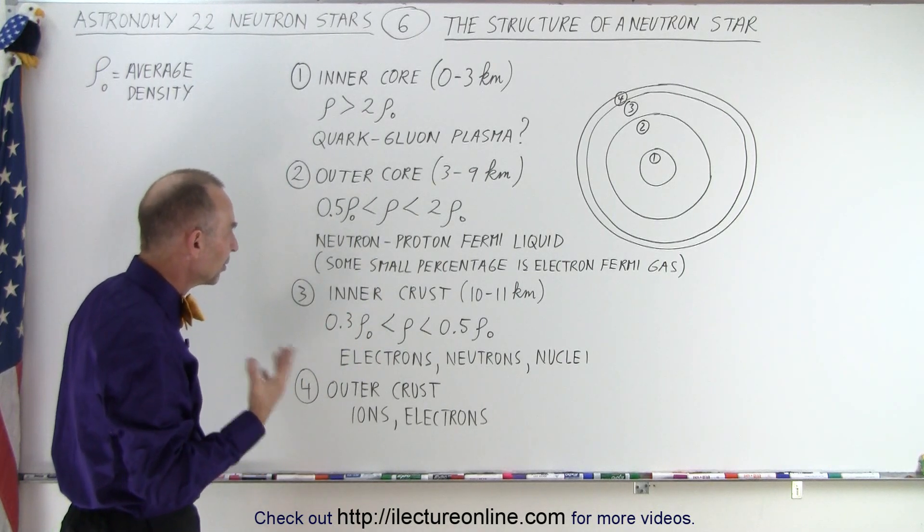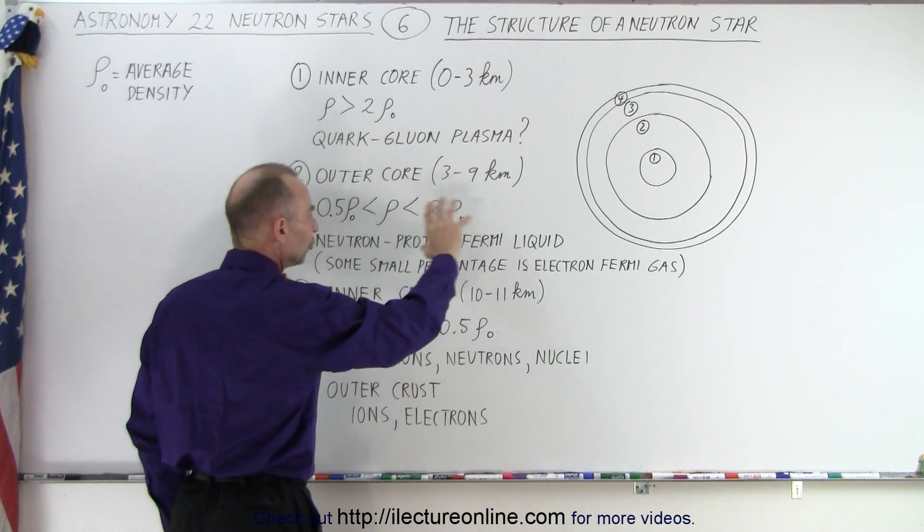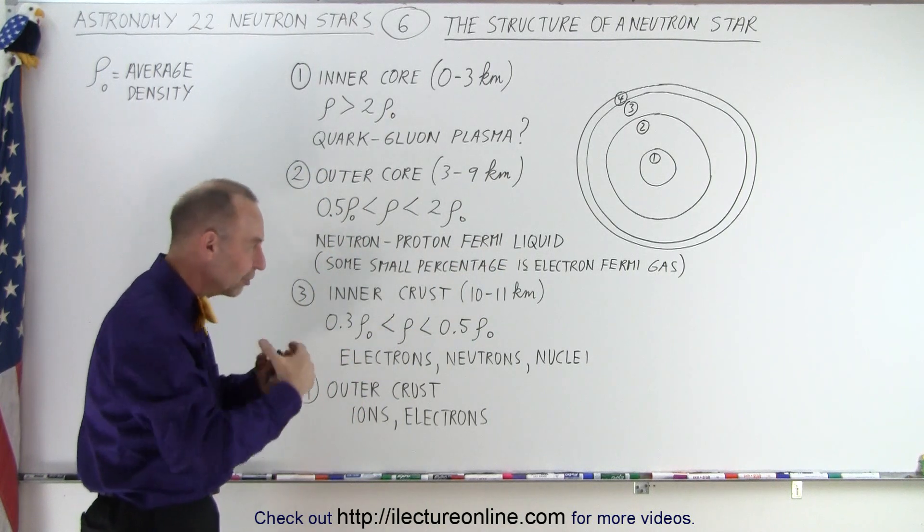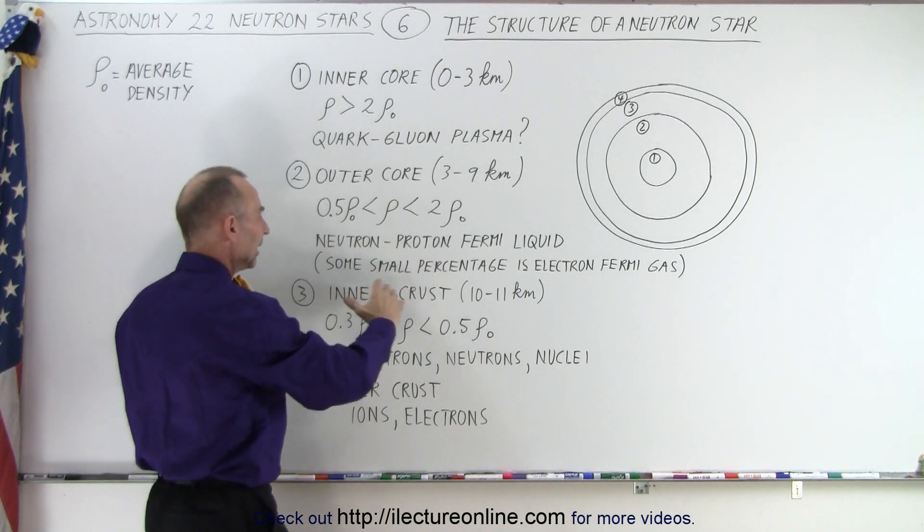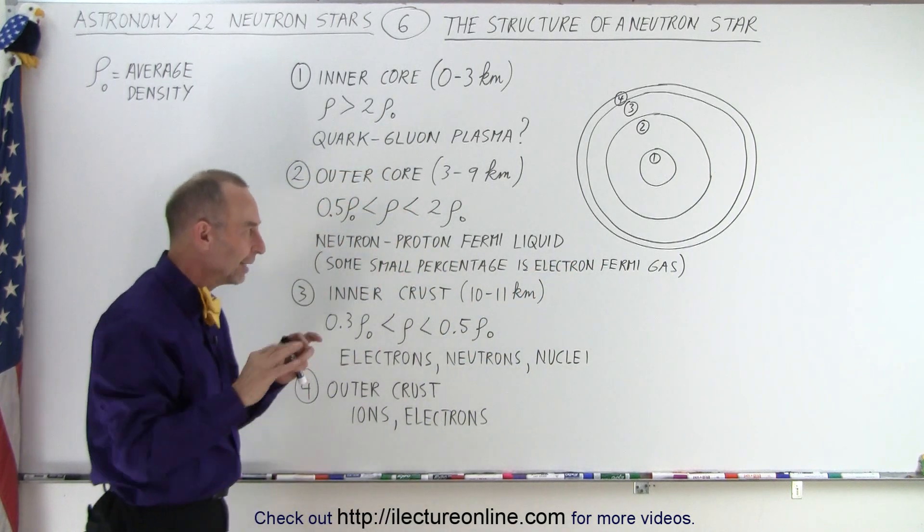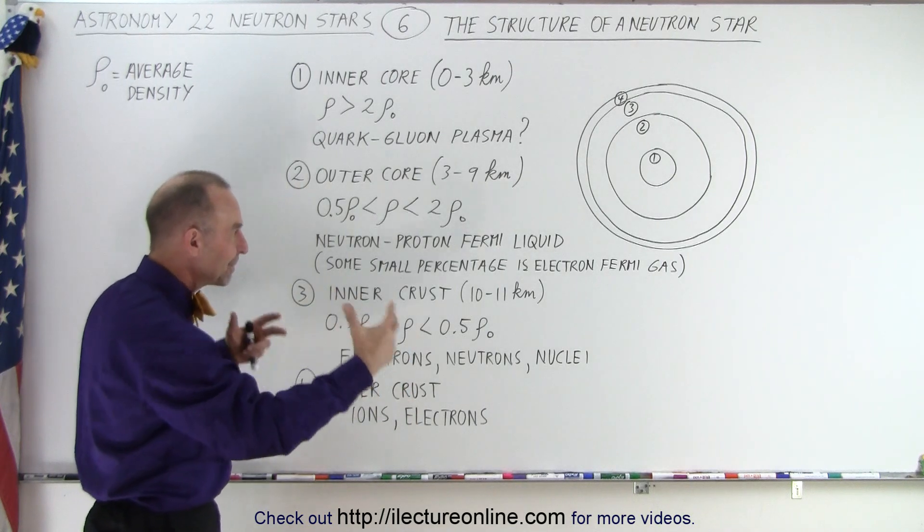So there we theorize that it's a mixture of neutrons and protons into what we would call a Fermi liquid, so that they're free to move around, but that they're not separated from one another. And within them is a small amount of electrons that move throughout the small gaps that may be there. And so that's kind of like a Fermi gas.